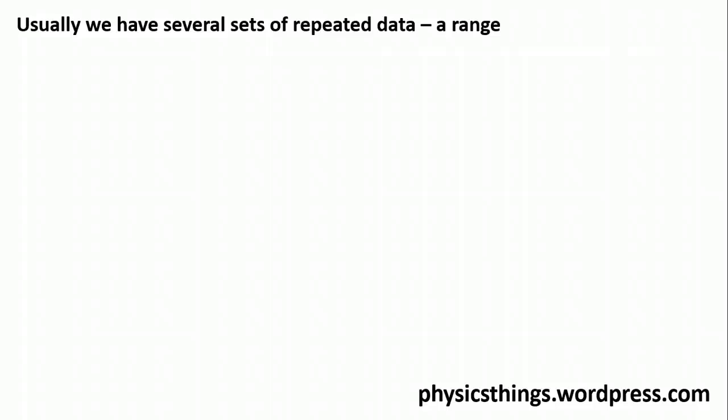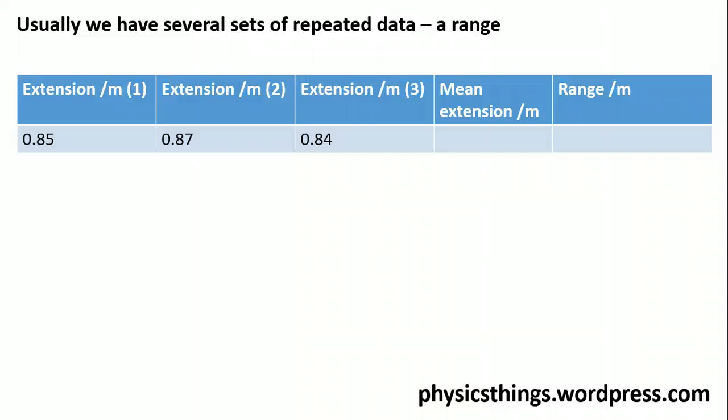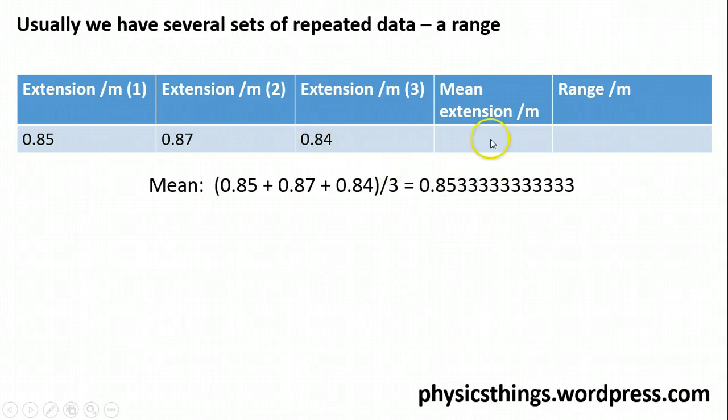Of course, usually, if you're being a good scientist, you'll actually be taking several sets of repeated data. You're going to get a range. So if we look at this table here for the extension of a spring, you can see I have three numbers. And of course, you would work out a mean extension, but there's also another column here that we need to think about: the range. The mean would be 0.853 recurring, but of course, that's far too accurate. In all of my other columns, I have two decimal places. I cannot get any more accuracy than two decimal places, even in my mean. So I need to round that up to the nearest of my two decimal places. So my mean extension there would be 0.85. Remember, of course, also for AQA, whenever you're labeling your tables, you label it as forward slash meter, not any other form.